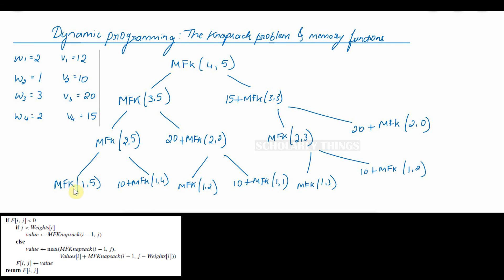Mfk of 1 comma 5. We'll be considering the second case. This will be max of mfk of 0 comma 5 comma 12 plus mfk of 0 comma 5 minus 2. Mfk of 0 comma 3. As we saw in the table when the weight was 0, it is 0. So 12 plus 0 is 12. Maximum among 0 and 12 is 12. So therefore mfk of 1 comma 5 is 12.